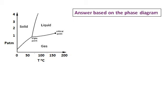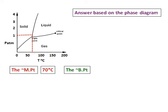Now answer the questions that follow based on the phase diagram given. First, what is the melting point? For the melting point, we look at one atmospheric pressure and find where it transitions from solid to liquid — from the graph, that is approximately 70 degrees Celsius. Next, what is the boiling point? Extending the one-atmospheric line to where it changes from liquid to gas, that temperature comes to approximately 150 degrees Celsius.